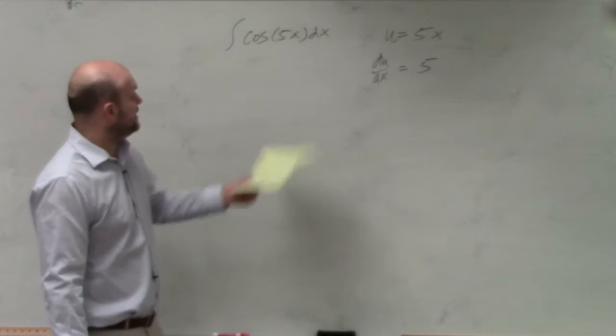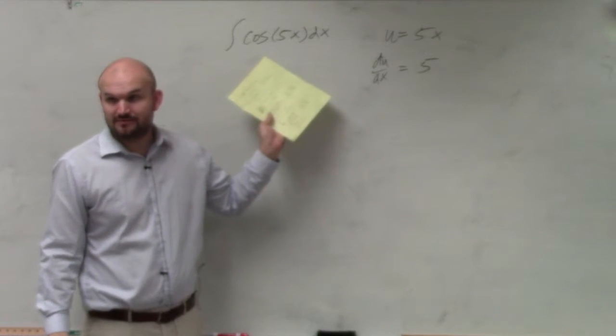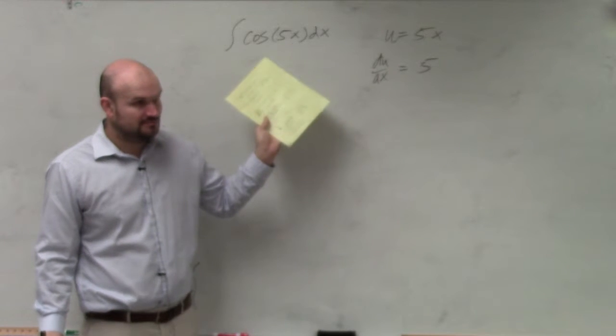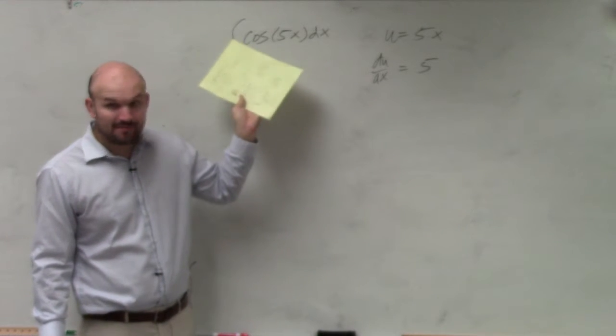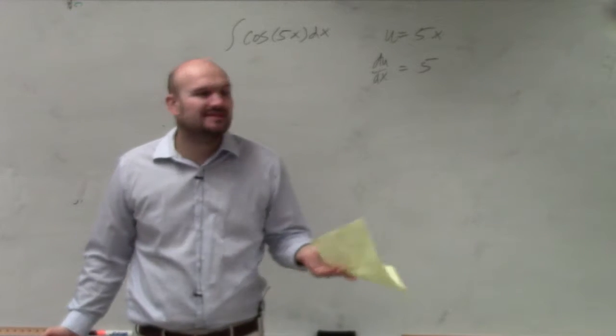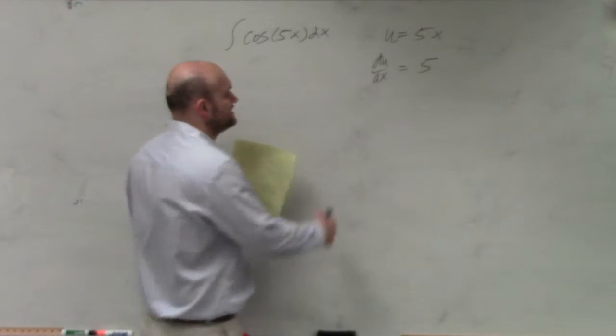Well, we obviously have an issue, right? Because there is no 5 over there. Do you guys agree? Yes, there's no 5. We're not multiplying by 5. But it's a numeric value. We can create that. That's not a big issue.